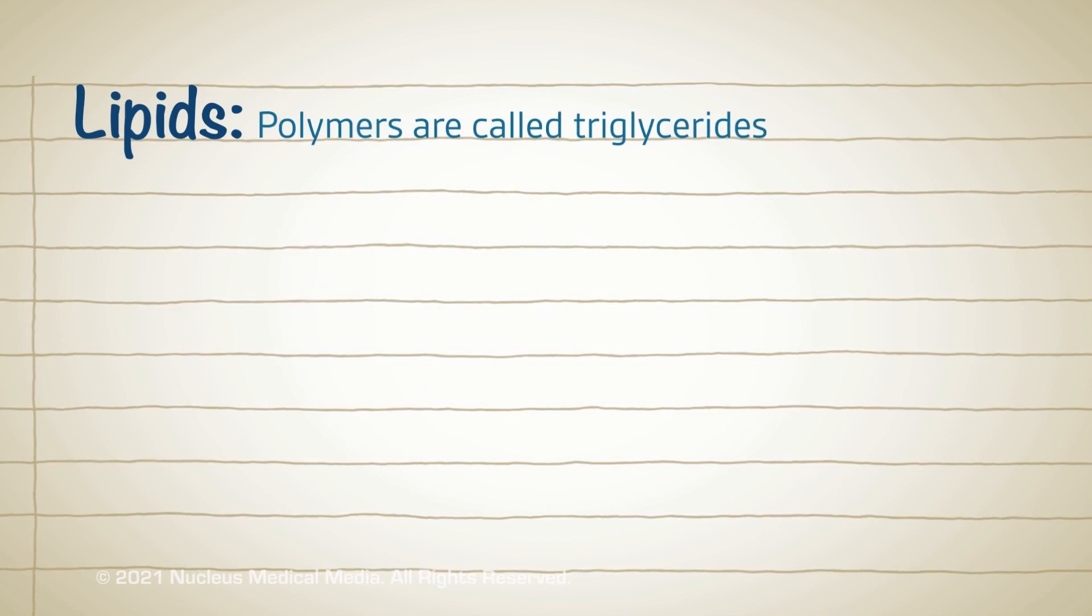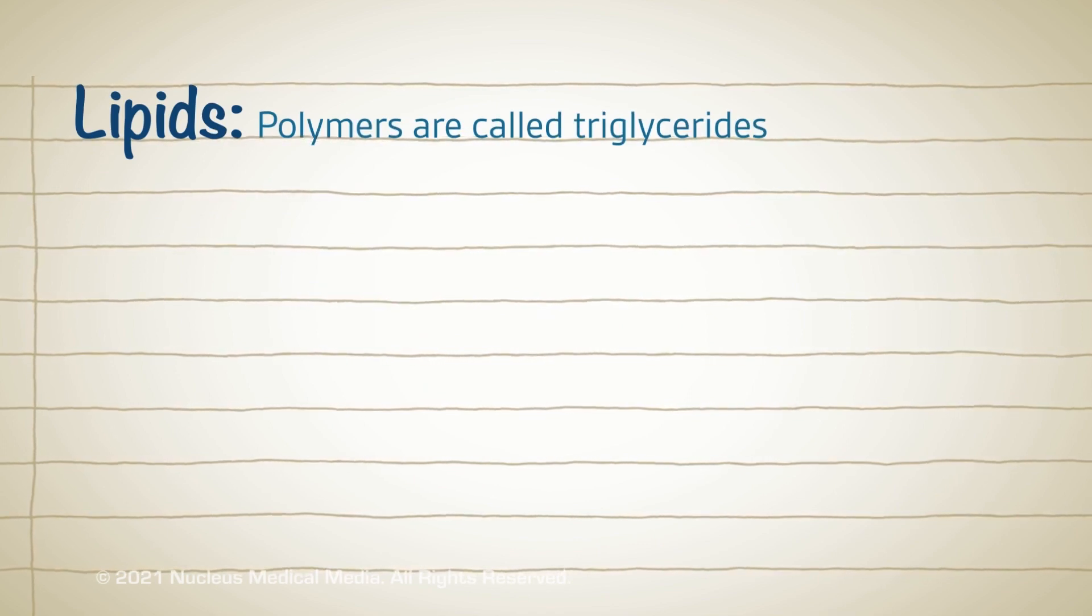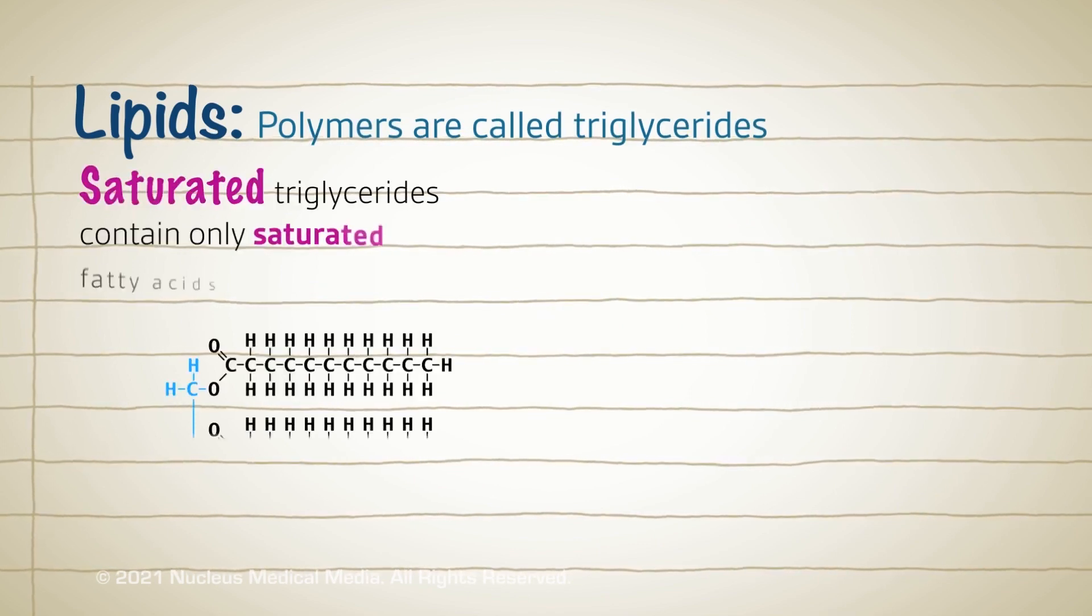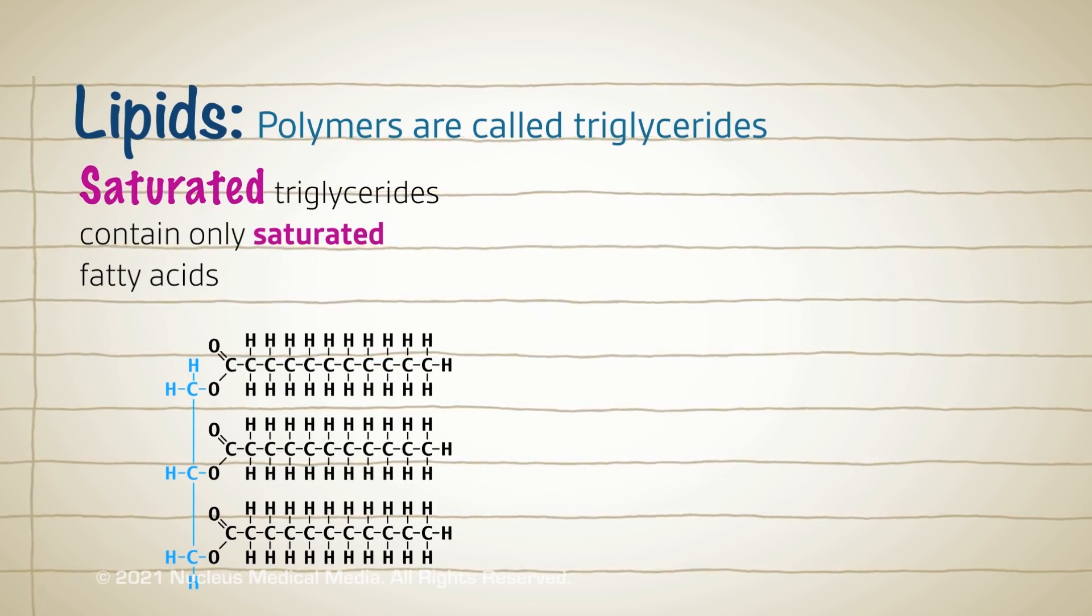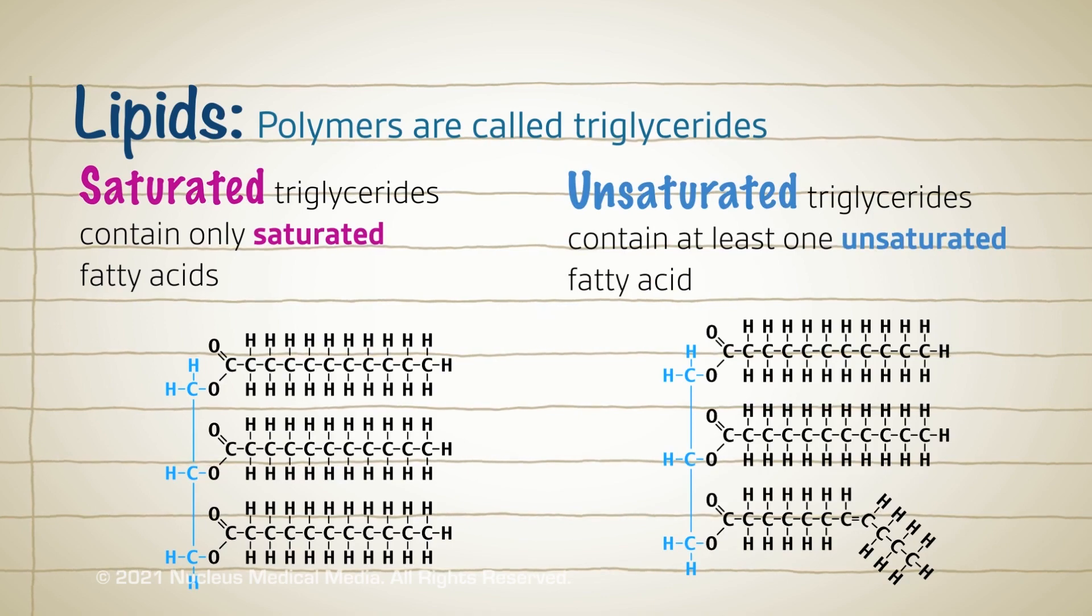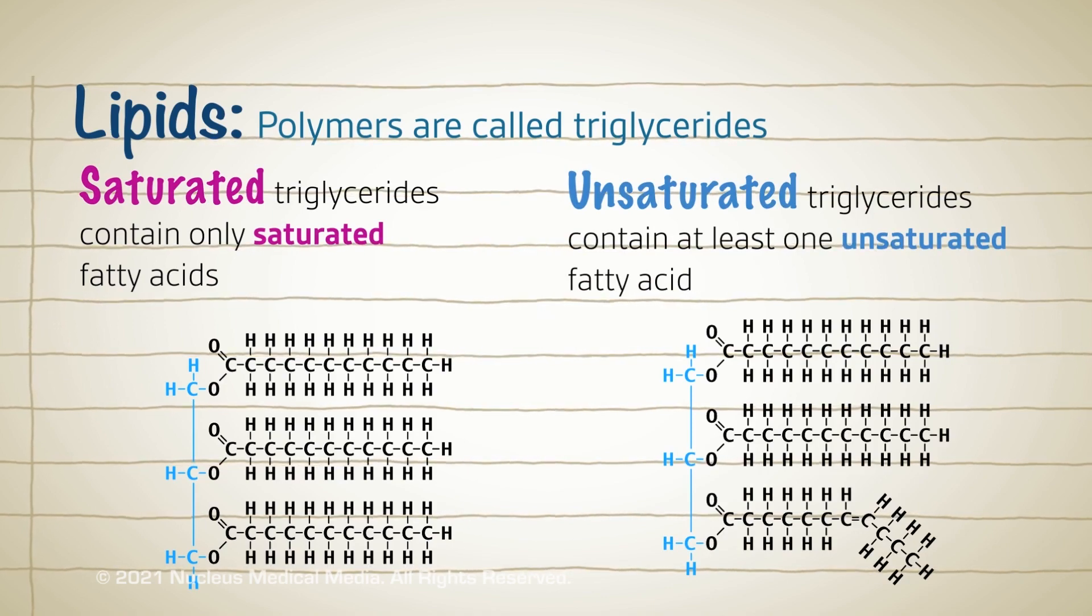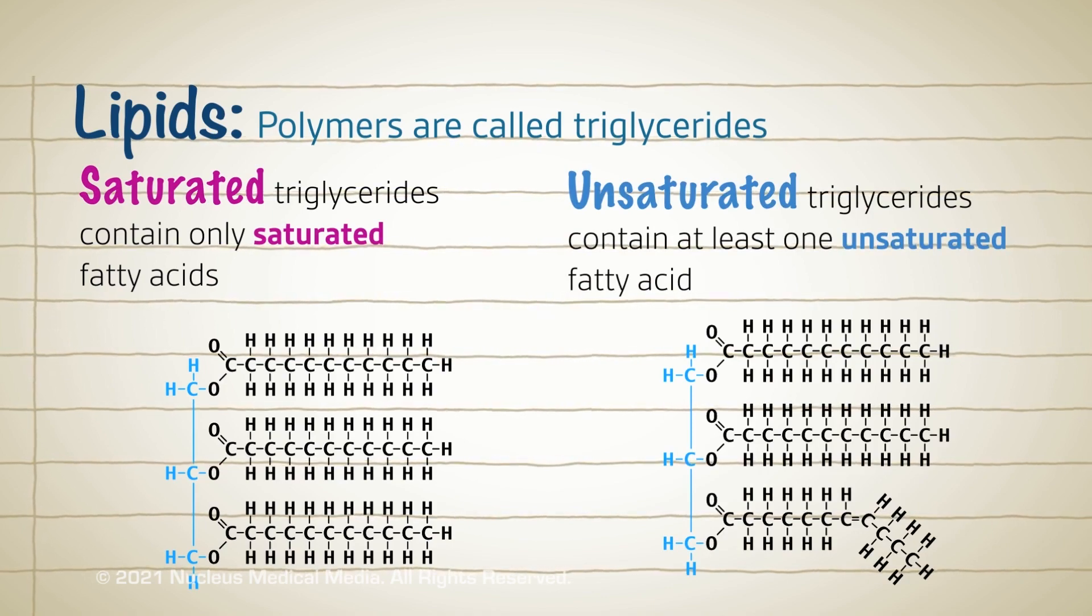Lipid polymers are called triglycerides. Saturated triglycerides contain only saturated fatty acids. Triglycerides are called unsaturated if they contain any unsaturated fatty acids.